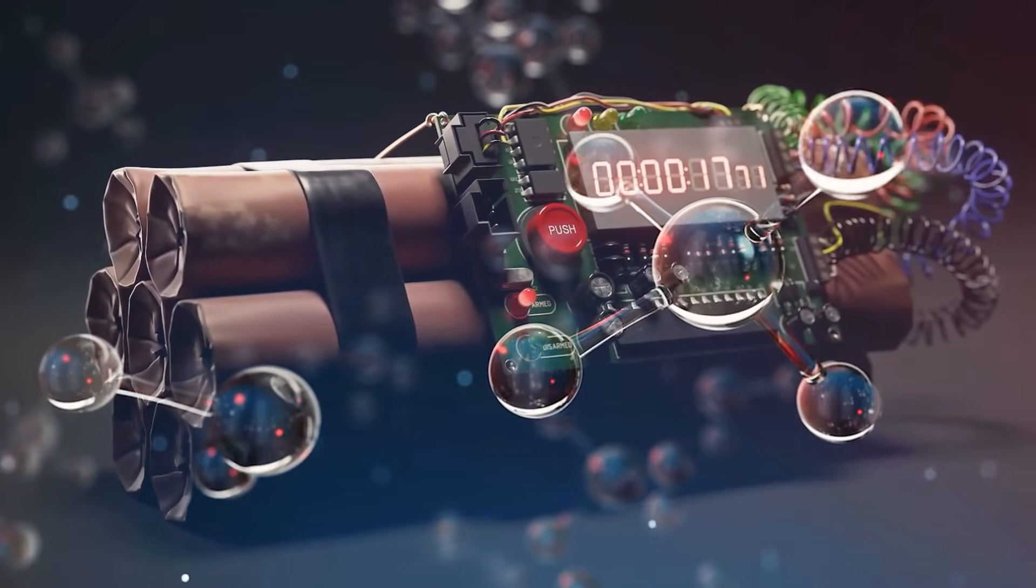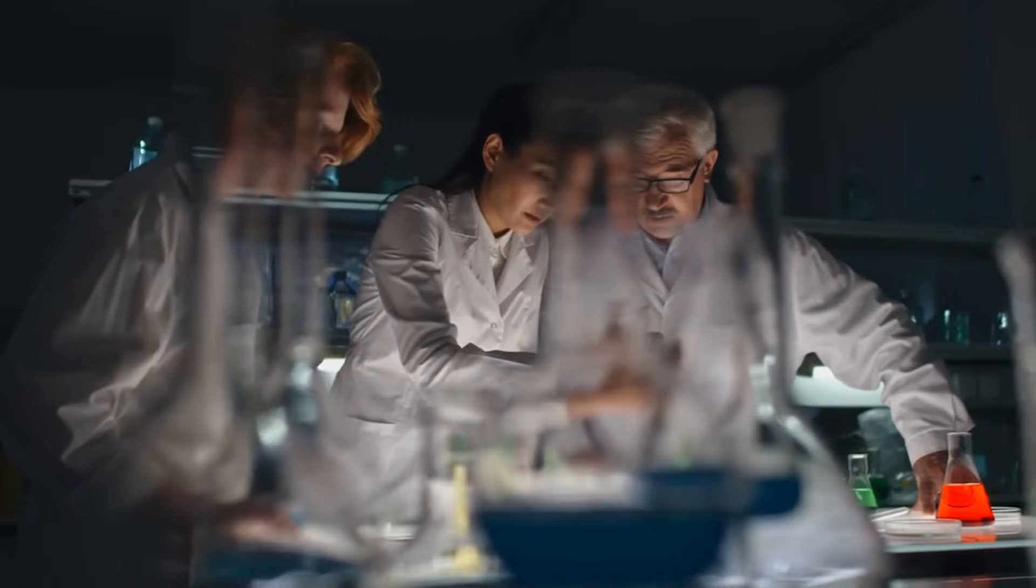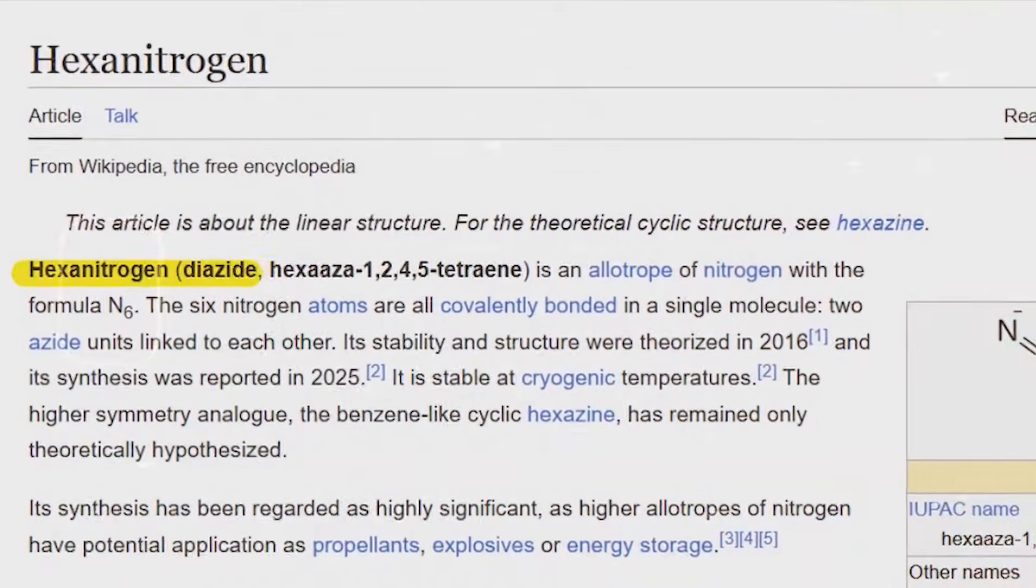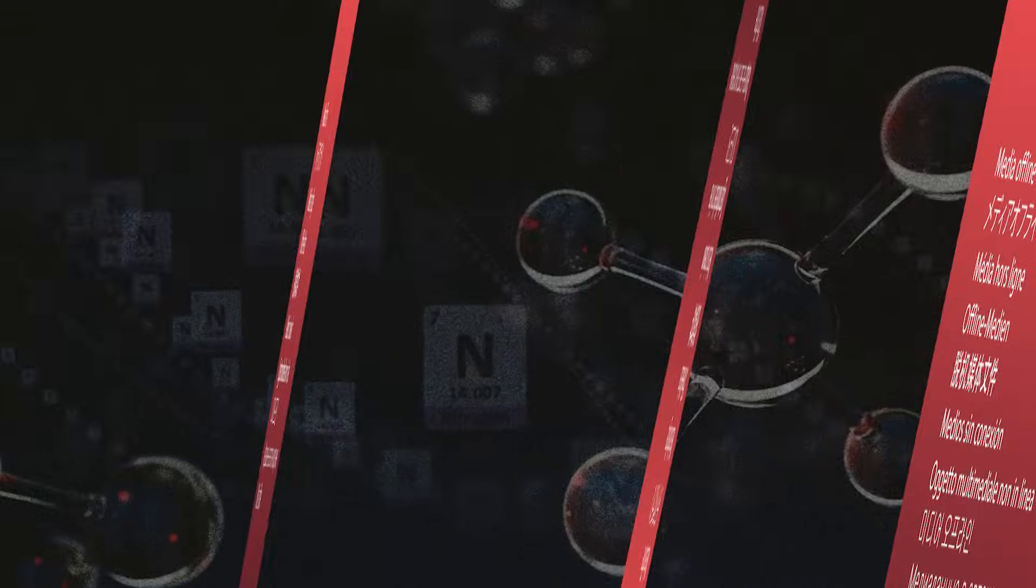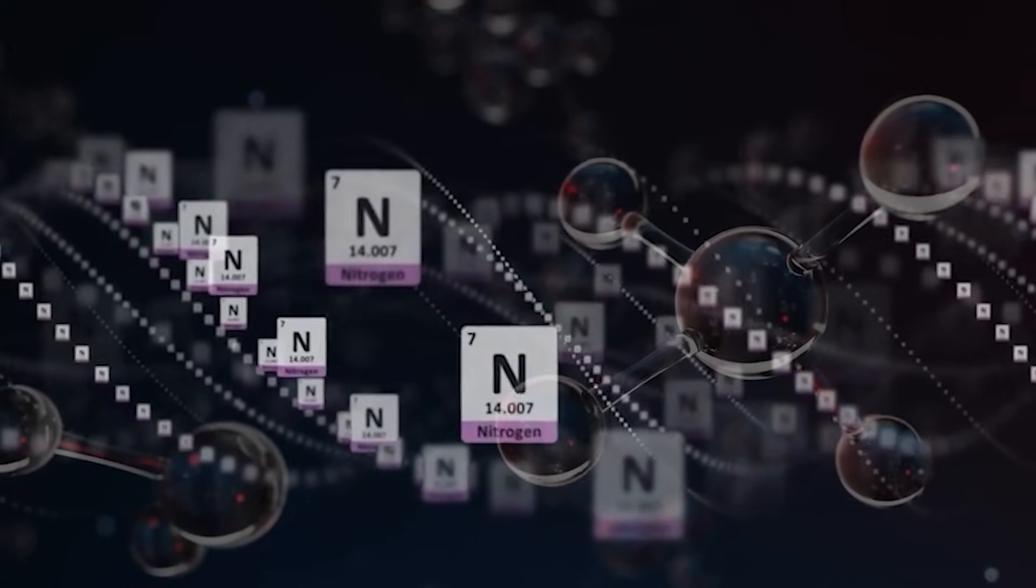A molecule that beats TNT sounds like a movie plot, yet it just came out of a German lab. In Giessen, researchers captured hexanitrogen, N6, a pure nitrogen molecule that should fall apart at once.